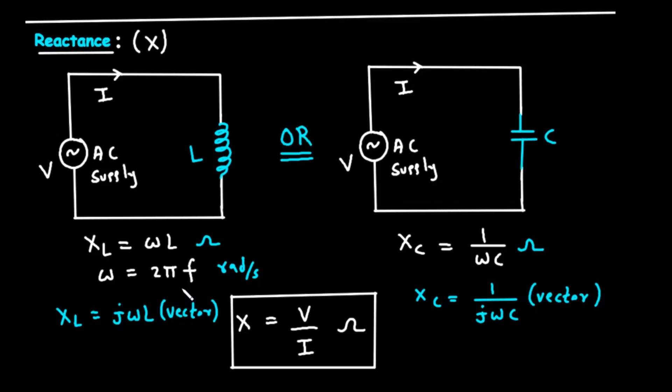So, the formula tells us that the inductive reactance increases as the frequency of the AC current increases, or as the inductance of the coil increases. More frequency means more opposition.